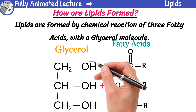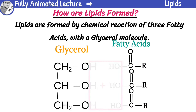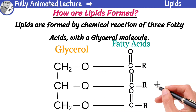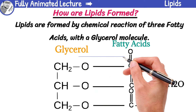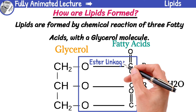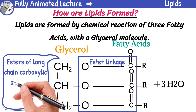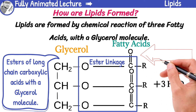When glycerol reacts with fatty acids, the three hydroxyl groups of glycerol react with the carboxylic acid group of three fatty acids. This reaction results in the formation of three ester bonds and releases three molecules of water. The bond formed between glycerol and fatty acid is known as ester linkage. So, lipids can also be defined as esters of long-chain carboxylic acids with a glycerol molecule. These esters are made of three fatty acids, therefore they are called triglycerides.